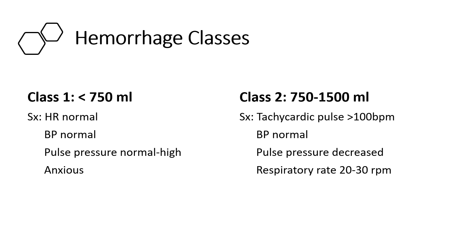In a class two hemorrhage, up to 1,500 mils is lost. A person may become tachycardic with a heart rate greater than 100 beats per minute. The blood pressure may remain normal, the pulse pressure may be decreased, and the respiratory rate may increase. The blood pressure remains normal because tachycardia is a compensatory mechanism — the heart beats faster to maintain blood pressure. But this is not sustainable; the heart is a muscle, tachycardia cannot last indefinitely, and eventually the blood pressure will drop.